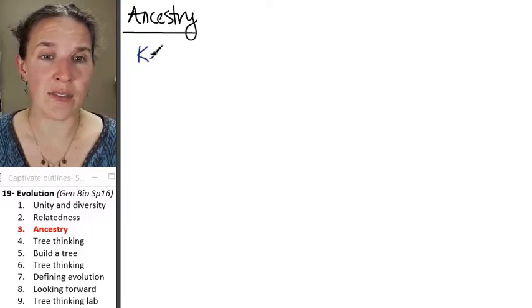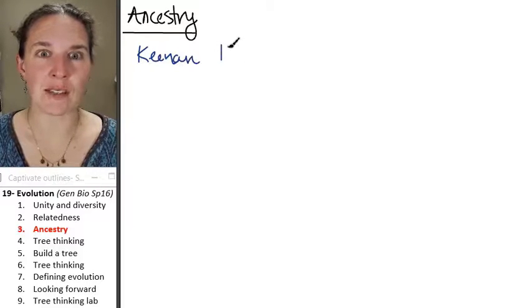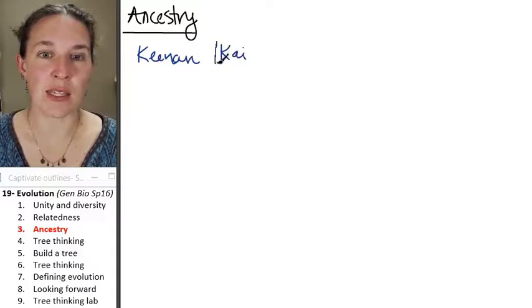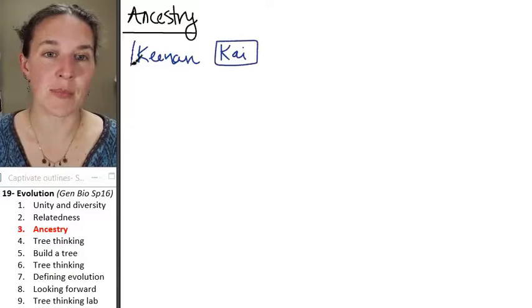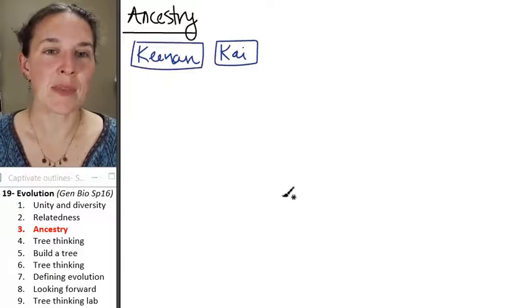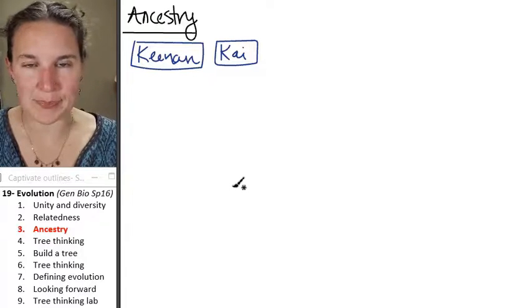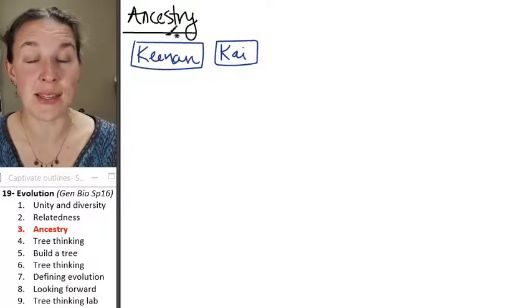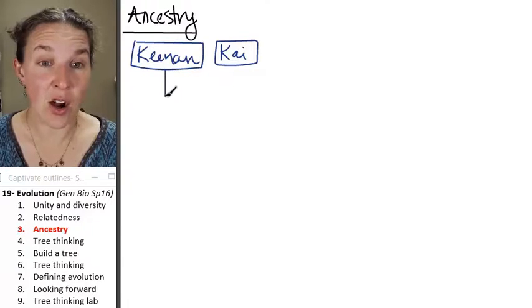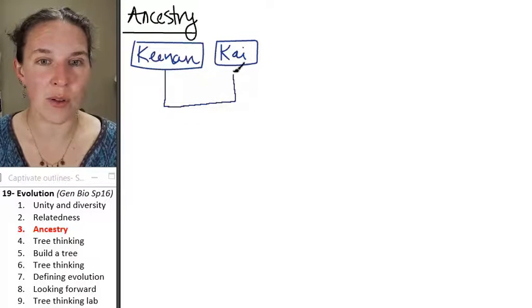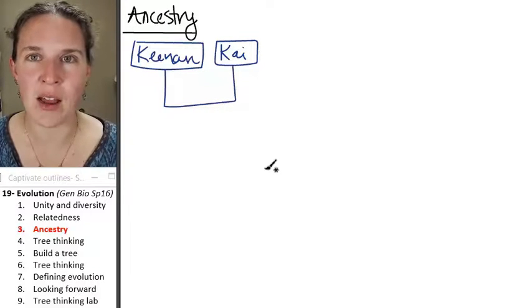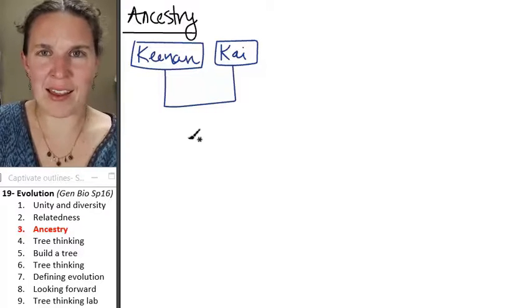So we're going to have a little box for Kenan and a little box for Kai. These are my small humans. I'm putting them in boxes at the top of my tree. Am I drawing a pedigree right now? Heck no.